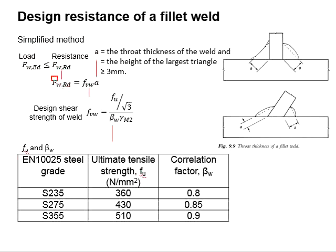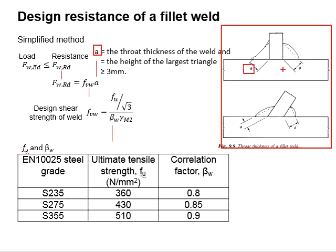The resistance is determined by multiplying the design strength of the weld with the throat thickness. This figure shows how we obtain the throat thickness 'a'.